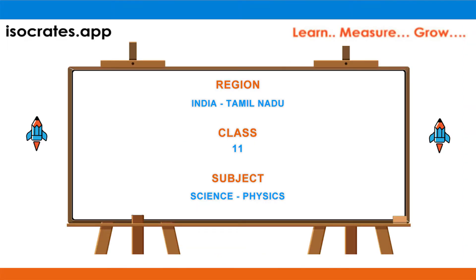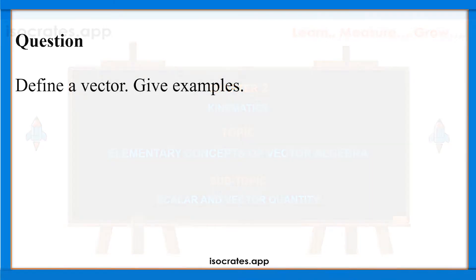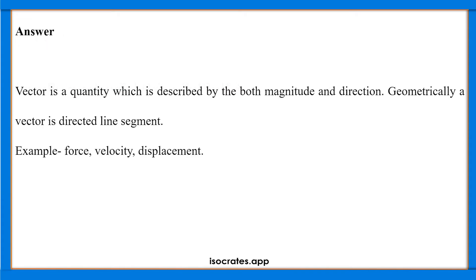Welcome to isocrats.app channel, a platform where you learn, measure, and grow. In this video, we will show a quick and simple way to solve the question: define a vector and give examples. Answer: a vector is a quantity which is